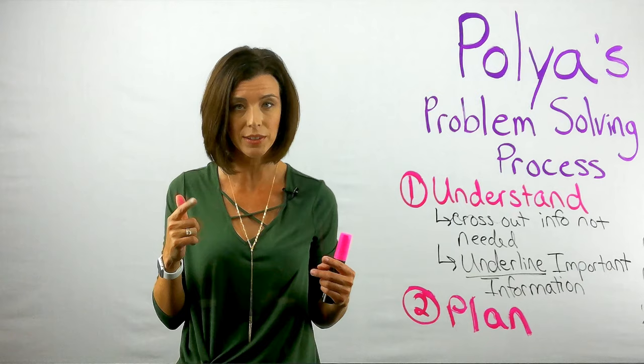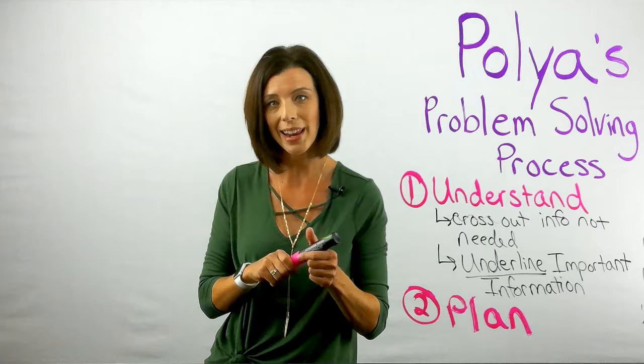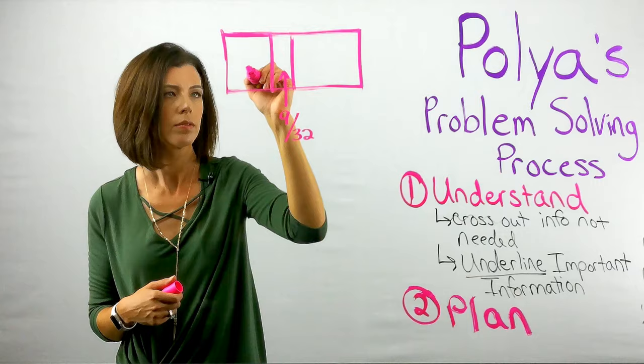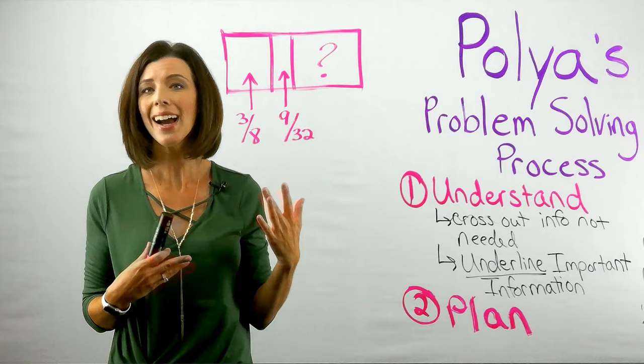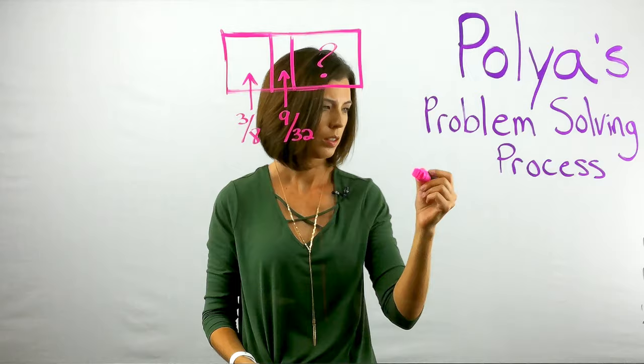For our problem, I'm going to go ahead and draw our picture. Once I've got this drawn, I can see that I need to solve for this piece right here and it just so happens that that's the portion of students that voted for the zoo. Again, I'm not getting hung up on the zoo because it doesn't really matter in this case.